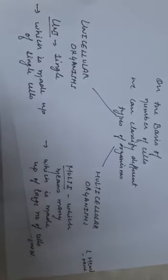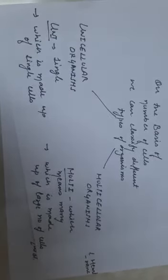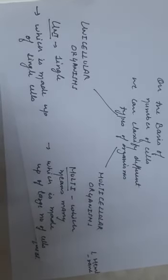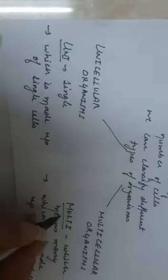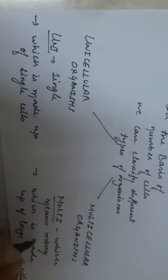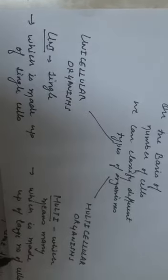There are two types of organisms: unicellular organisms and multicellular organisms. As the name predicts, uni means single, whereas multi means many. Unicellular organisms are those which are made up of a single cell, whereas multicellular organisms are those which are made up of a large number of cells.